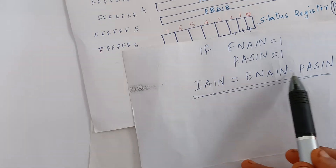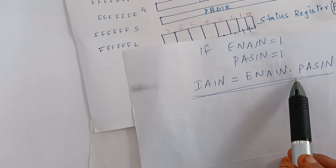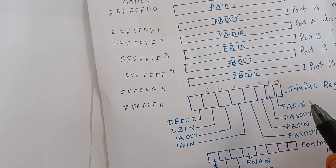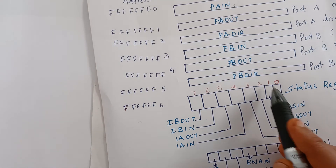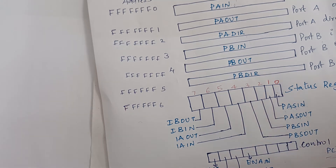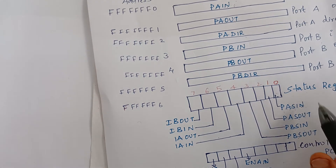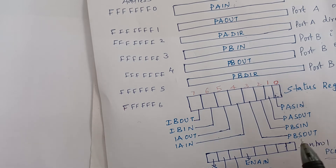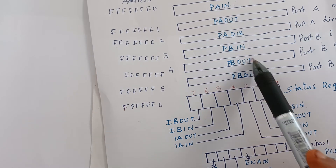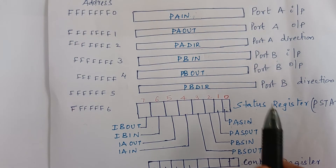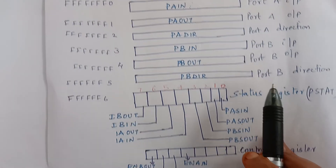The relation is: IAN = ENAN (enable AND status flag). A single interrupt request signal is used. In response to this interrupt request, the processor examines the status flag to determine the actual source of the request. In summary, the control register and status register are used for controlling the data transfers to and from the devices connected to Port A and Port B.